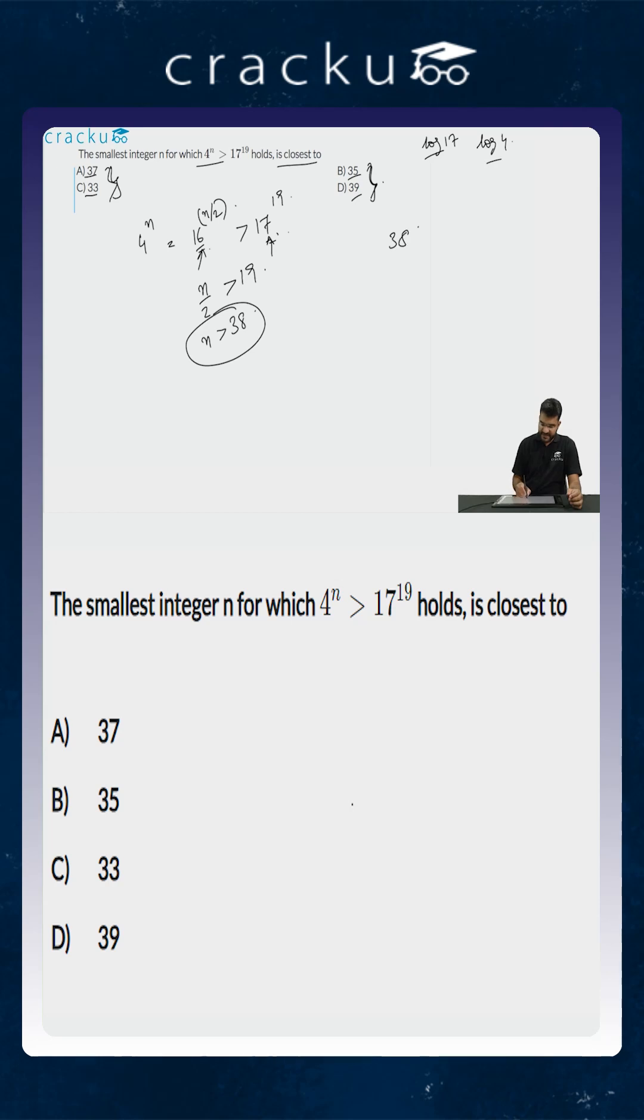You know that there is 38 here and all the other options are to the left of 38. There is only one option which is 39 which is greater than 38. So you know that of all the four options, the option which will be closest to n will be 39.